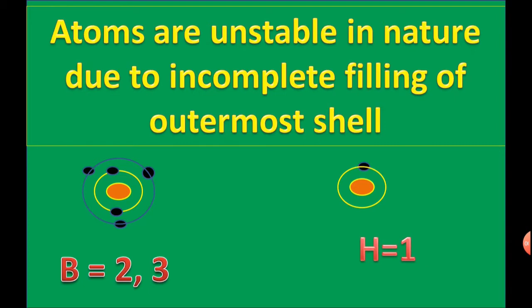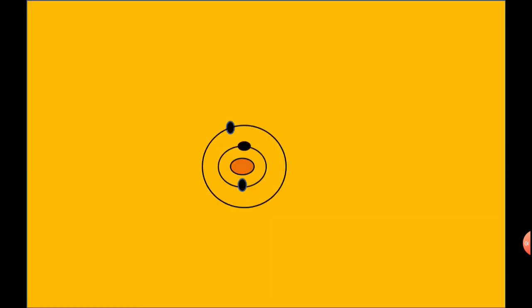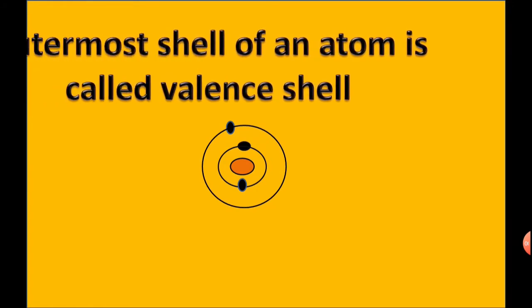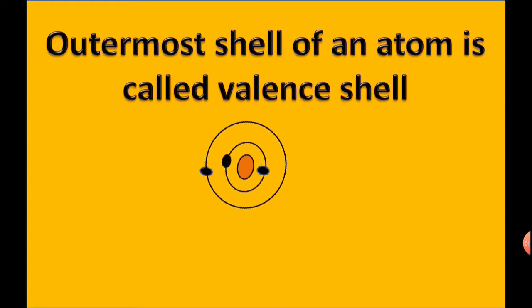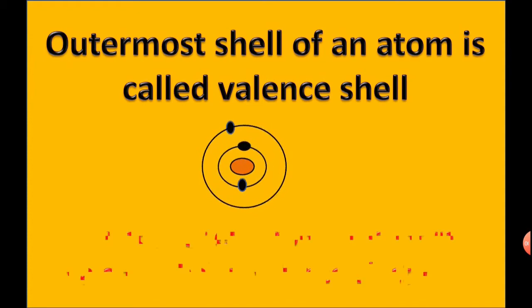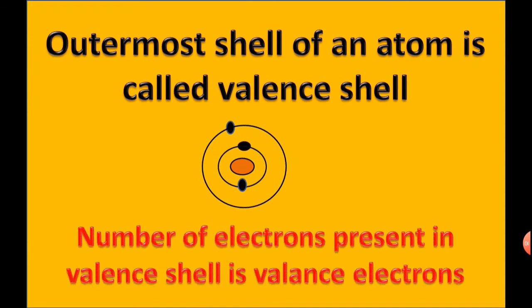Hydrogen has only one electron in its outermost shell. The outermost shell of an atom is called the valence shell, and the number of electrons present in the valence shell are called valence electrons.